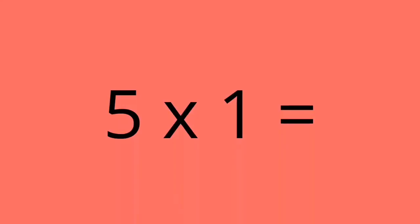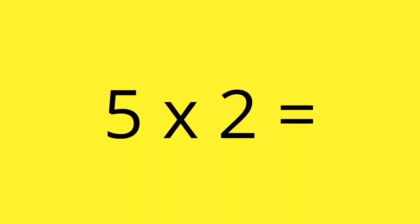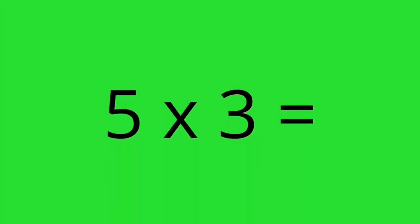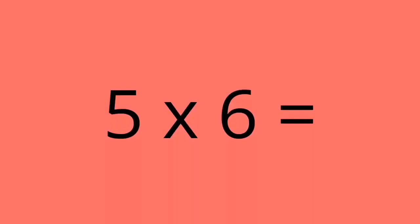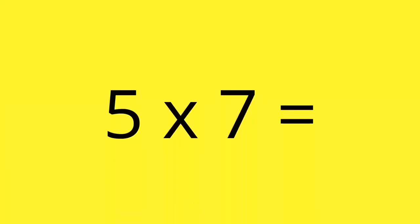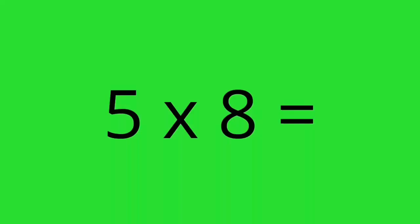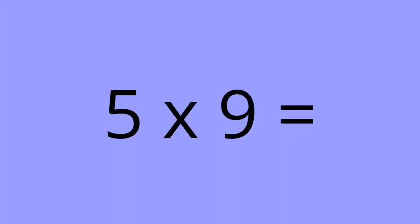Five times one equals five. Five times two equals ten. Five times three equals fifteen. Five times four equals twenty. Five times five equals twenty-five. Five times six equals thirty. Five times seven equals thirty-five. Five times eight equals forty. Five times nine equals forty-five. Five times ten equals fifty.